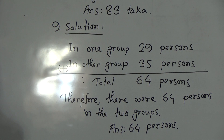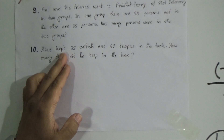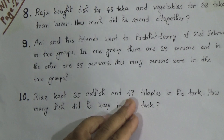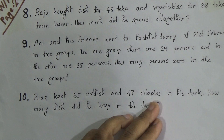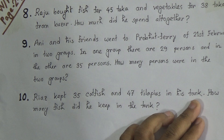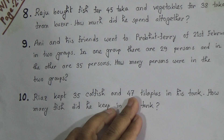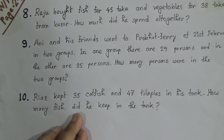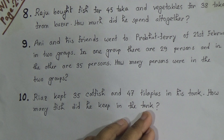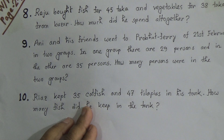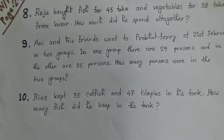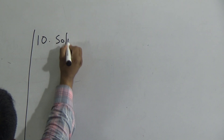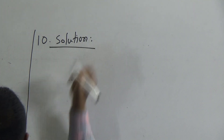Now we are going to solve question number 10. The question number 10 is: Riyaz kept 35 catfish and 47 tilapias in his tank. Tank means a pond. In that pond there are 35 catfish and 47 tilapias. How many fish did he keep in the tank? That means in total how many fish — we need to calculate. It is also an addition problem. This is the solution of question number 10.